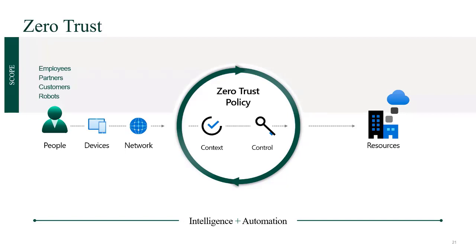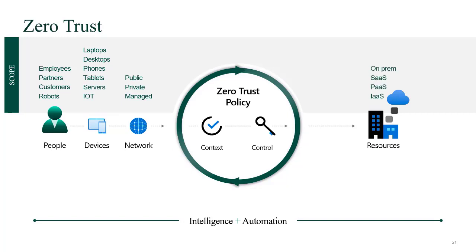The scope of this can be pretty broad. People might be an employee, a third-party partner, a customer, a vendor, or even a robot — basically anything that has an identity. On their device, which might be a laptop, desktop, phone, tablet, server, IoT, or web-enabled coffee maker. On a network, which may be public, private, managed, unmanaged, a Tor network, or a botnet. To get to a resource, which could be on-prem, off-prem, SaaS, PaaS, or IaaS.